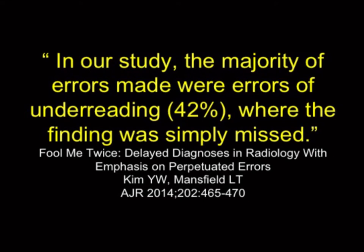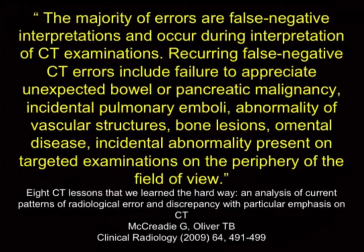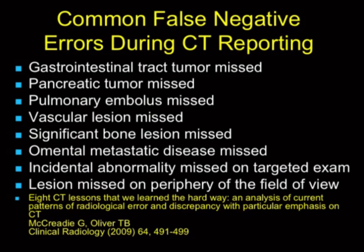The fact that errors are typically under-reading is not new. An article by McGrady in Clinical Radiology described a number of recurring false negative CT errors. It's not that we make a million different errors — we make certain specific ones. GI tract tumors are missed, pancreatic tumors are missed, PEs are missed, vascular lesions, bone lesions, incidental abnormalities missed on a targeted study, and lesions missed at the periphery.